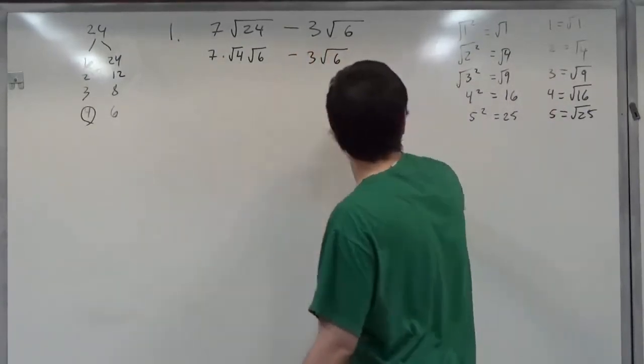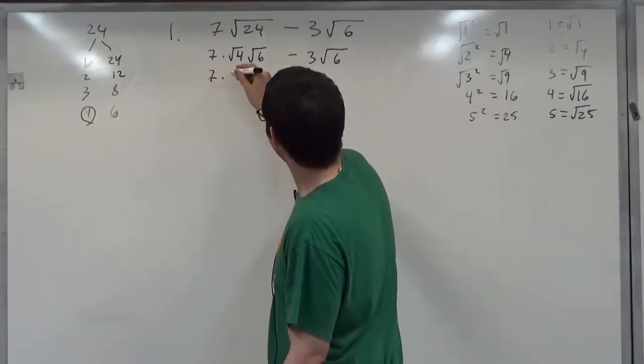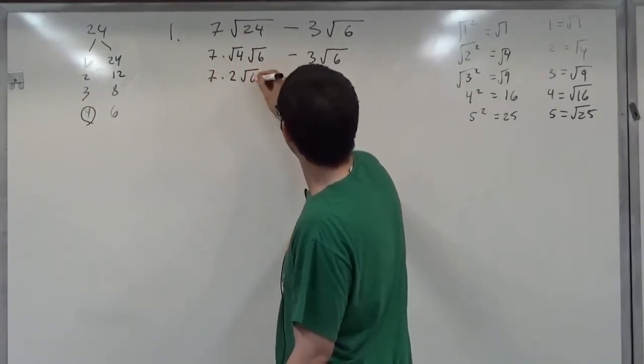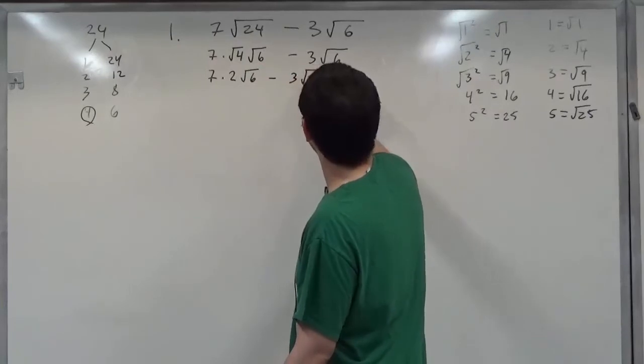We know that square root of four is two, so we have seven times two square root six minus three square root six.